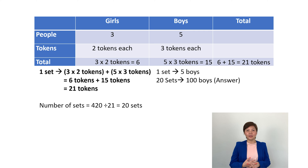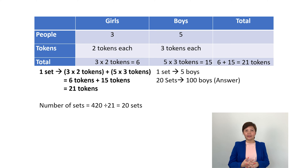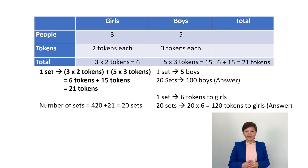Let's take a look at Part B: how many tokens did the girls receive in total? Take a look at the table — it shows that in one set, 6 tokens were given to the girls. So in 20 sets, 20 times 6, that means 120 tokens were given to the girls.